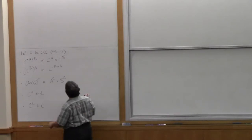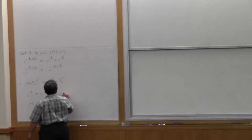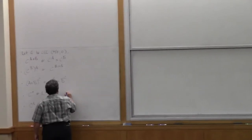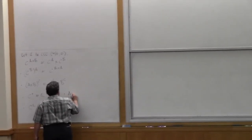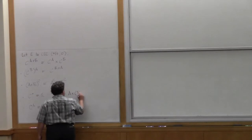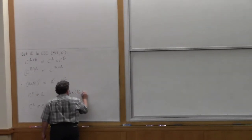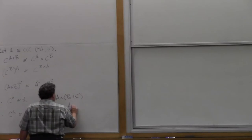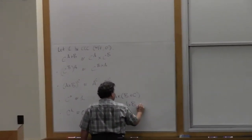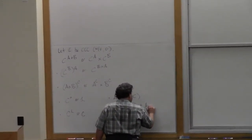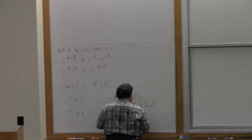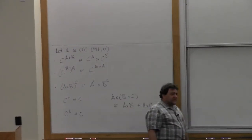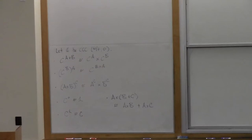There's also a distributive law — I should have put that one in too. There's the usual distributive law for distribution of products over sums. So all of the usual arithmetic of the natural numbers can be expressed in this setting of Cartesian closed categories.